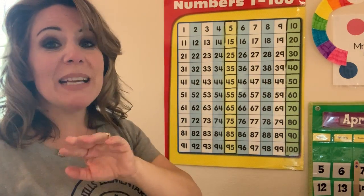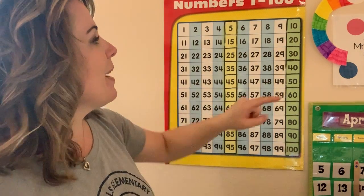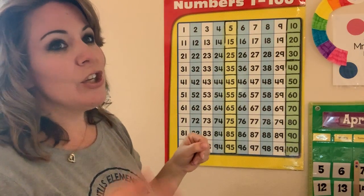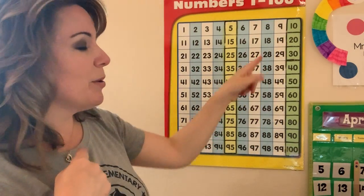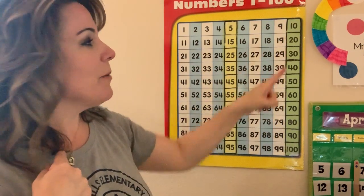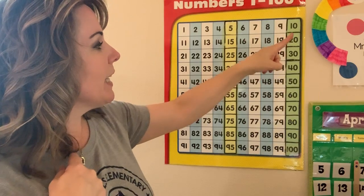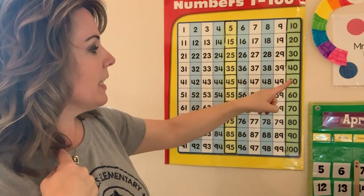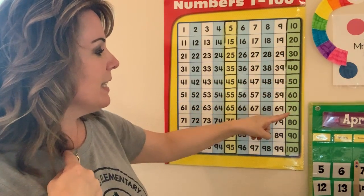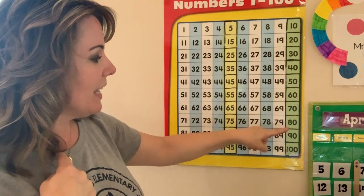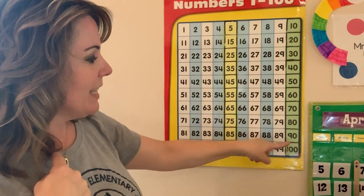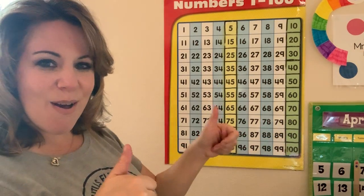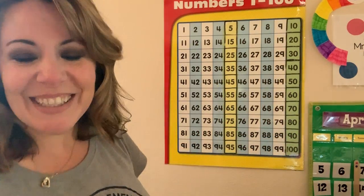Good. And just by tens this time. Ready? Let's clap while we do it. You clap, I'm going to point. Ready? 10, 20, 30, 40, 50, 60, 70, 80, 90, 100. Good job.